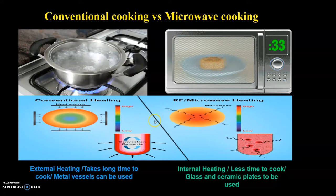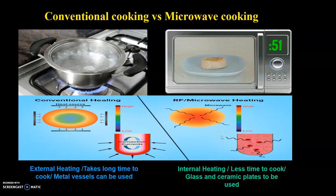This figure explains the difference between conventional heating and microwave heating. Conventional heating is external heating — it takes longer time to cook the food, and metal vessels can be used. Whereas in the case of microwave, it is internal heating, less time to cook, and glass and ceramic plates are to be used.